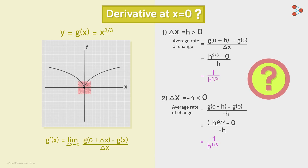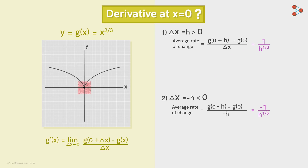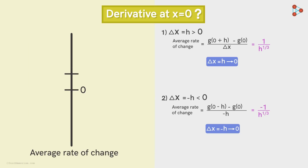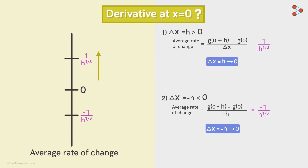Now can you tell me what's the next step? We need to find whether these average rates approach the same number as delta x, that is h, tends to zero. For this, let's represent these average rates on a number line. In the first case, the average rate will be a positive number, and in the second case, it will be a negative number. As h tends to zero, in the first case, the value of average rate will move up on the number line — that is, it will approach a larger positive number. And in the second case, its value will move down — approaching a smaller negative number.